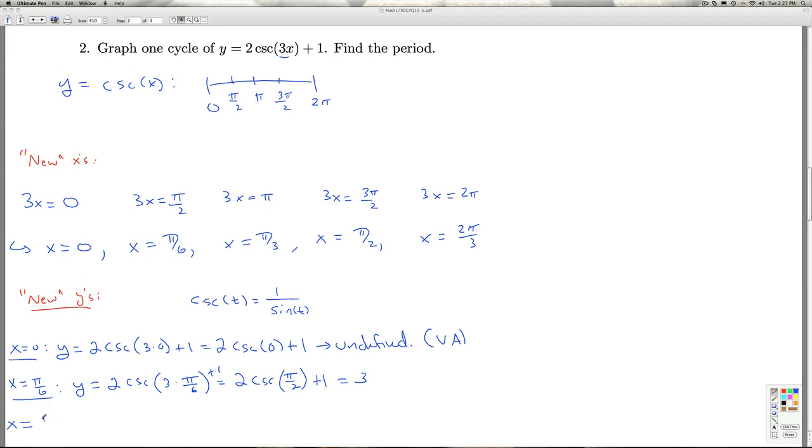For x = π/3, I get y = 2csc(3·π/3) + 1, which is 2csc(π) + 1. The cosecant of π is 1 over sine of π, which is 1/0. The cosecant of π is undefined, producing another vertical asymptote.